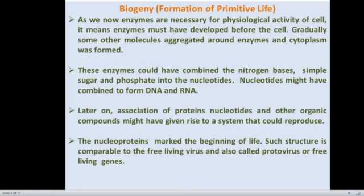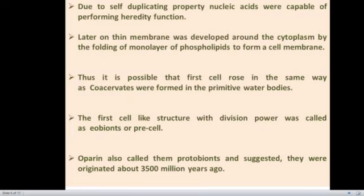Such nucleoprotein particles were similar to free-living viruses and were named as protovirus or free-living genes. Due to self-duplicating properties, the nucleic acids were capable of performing high-duty functions. Later on, a thin membrane was developed around the cytoplasm by refolding of a monolayer of phospholipid to form a bilayer of phospholipid, which is just similar to the membrane of present cells. The first cell-like structure with division power was named as eobionts, protocells, or precells.